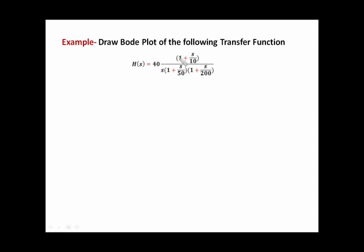It is very clear that in this transfer function, we have one zero located at 10, one pole at the origin, one pole located at 50, and another pole located at 200. The gain of the transfer function is 40.